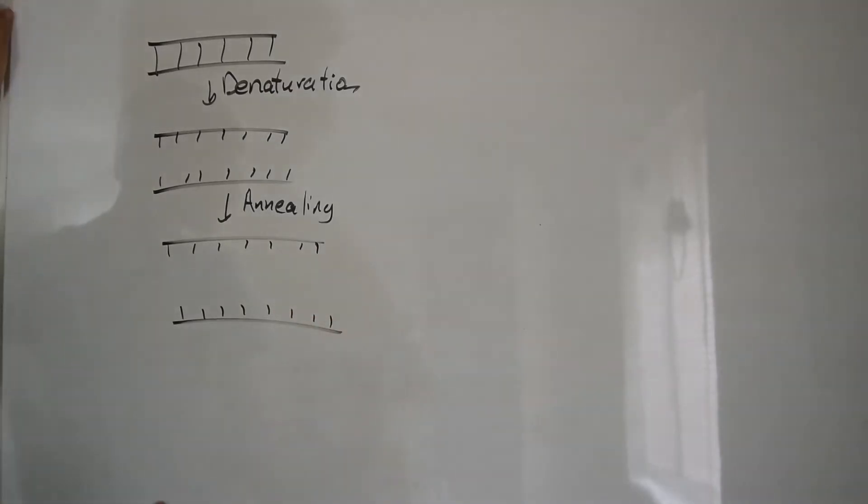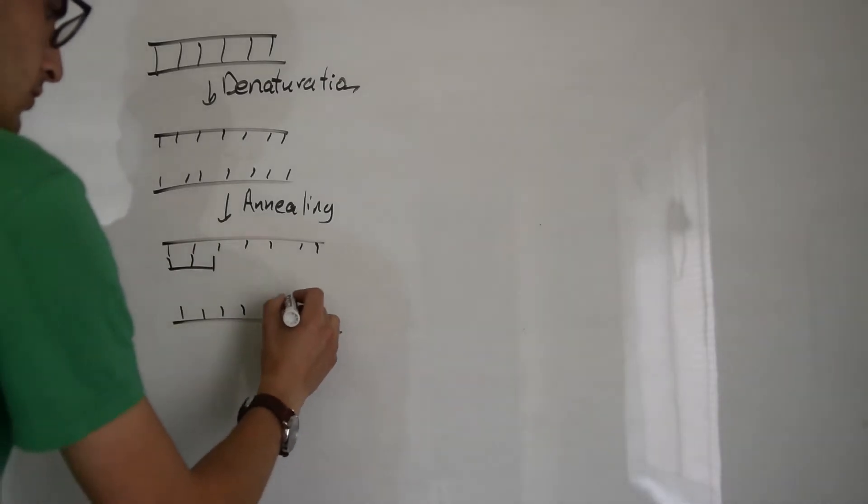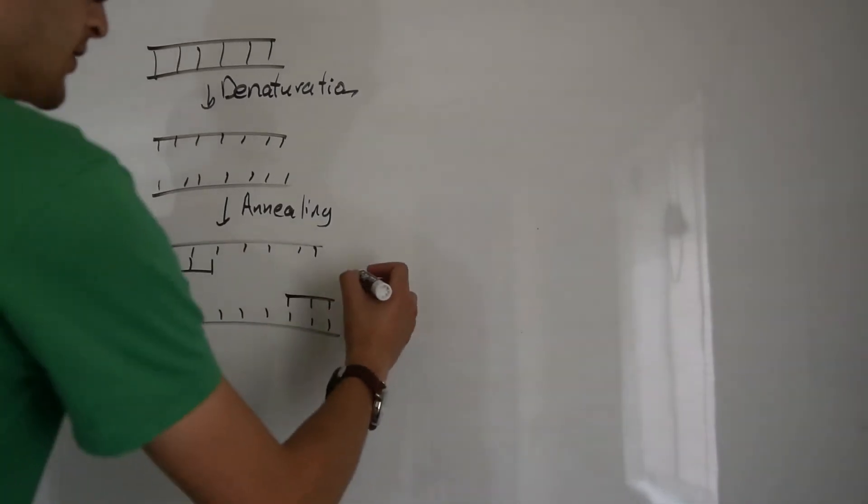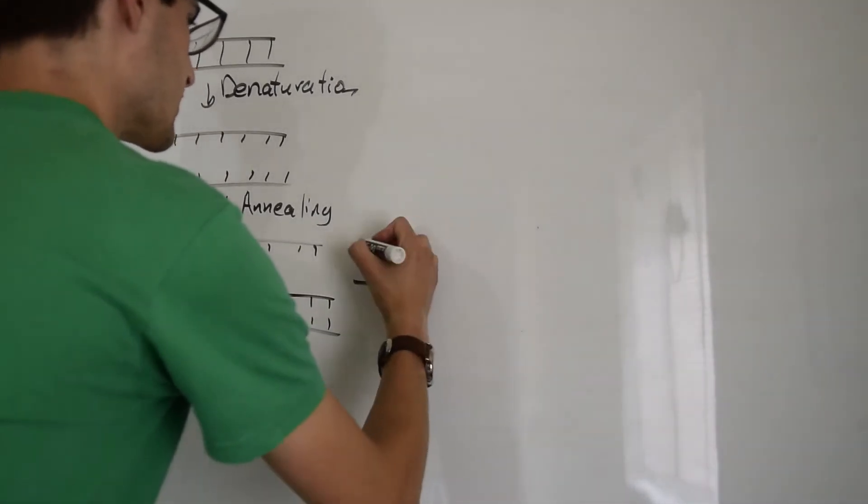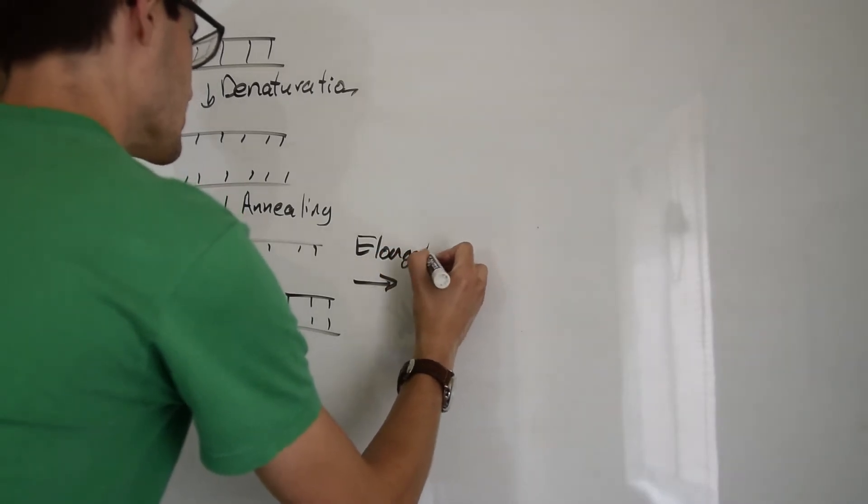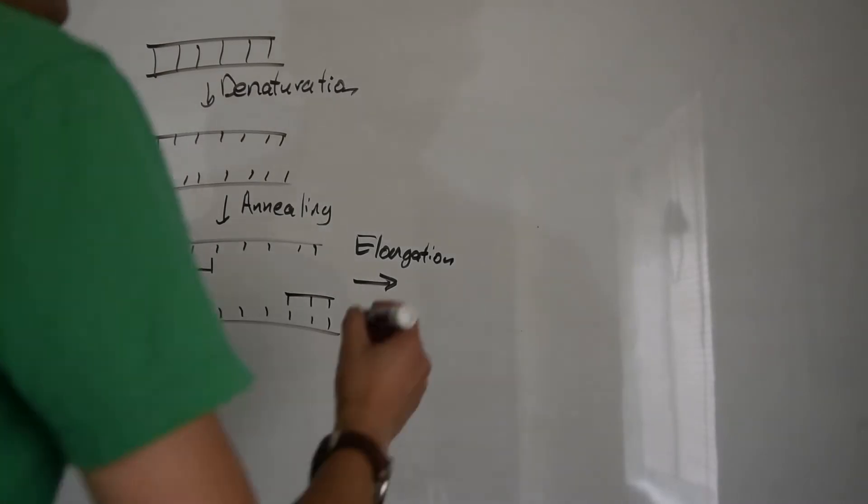Finally, the third step, elongation, takes those primers and adds bases on their end using the DNA polymerase enzyme. This occurs almost always at 72 degrees Celsius. It adds on bases one by one until you have achieved a reverse complement strand to the original template.